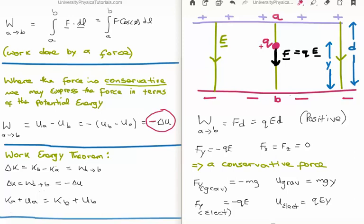Notice that the work done is positive. The Y component of the electric force is simply minus the test charge multiplied by the electric field, and there is no component in the X or Z dimension. This means we're dealing with a conservative force in the exact same way as gravity. If we look at gravity, the Y component of the gravitational force equals minus Mg and the gravitational potential energy is Mgy. Similarly, the Y component of the electric force is minus Q times E, and the electric potential energy is Q times E times Y. So the electric force is conservative in a similar fashion to gravity.